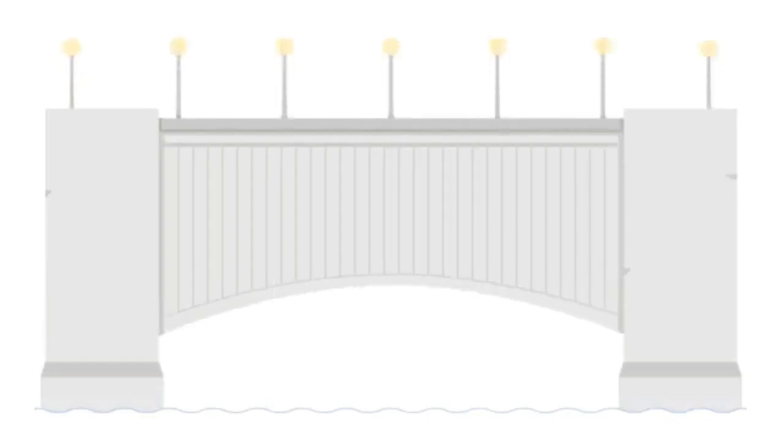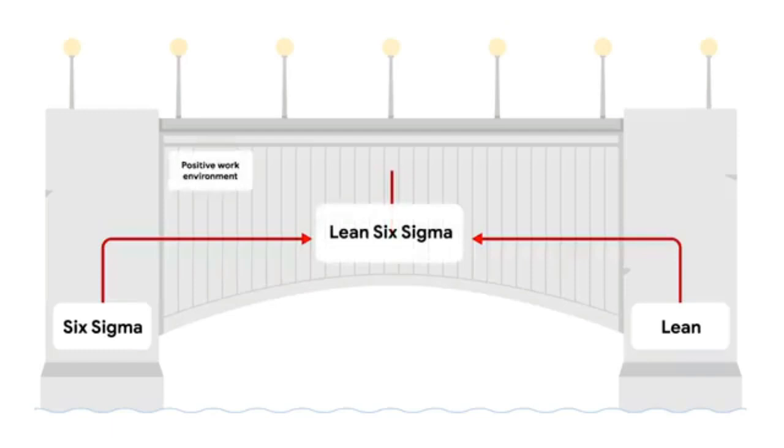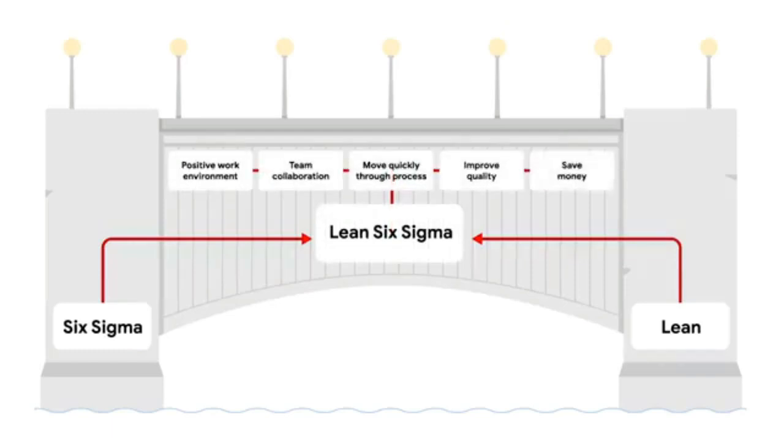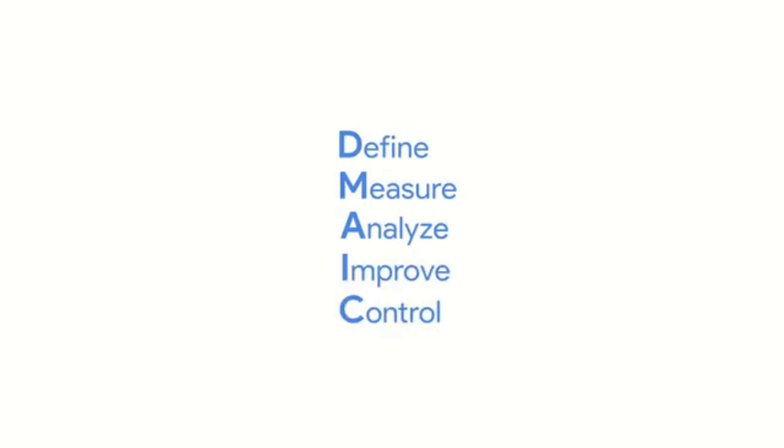Lean Six Sigma is one more methodology you can add to your toolbox — it's a combination of two parent methodologies, Lean and Six Sigma. The uses for Lean Six Sigma are common in projects that have goals to save money, improve quality, and move through processes quickly. It also focuses on team collaboration, promoting a positive work environment — the idea is that when your team feels valued, motivation and productivity increase. There are five phases in the Lean Six Sigma approach, commonly known as DMAIC: define, measure, analyze, improve, and control. DMAIC is a strategy for process improvement, meaning you're trying to figure out where the problems are in the current process and fix them so that everything runs more smoothly.